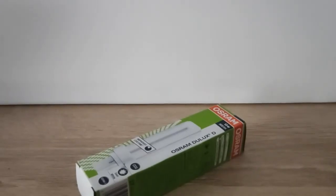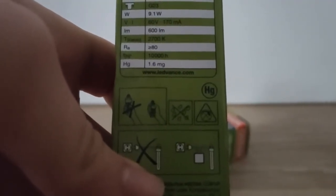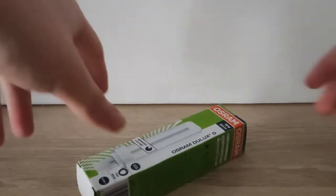Before unboxing, I want to point out that there's no printing about mercury on the entire box. For example, this one has less than 1.6 milligrams of mercury. Okay, let's unbox it.